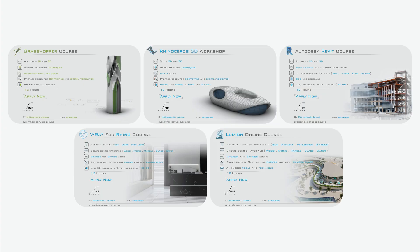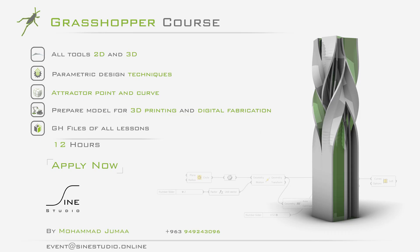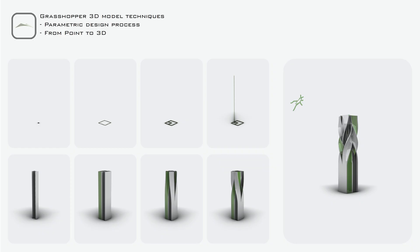We also offer other courses like Rhino, Revit, V-Ray for Rhino, and Lumion. In this course, we will learn everything related to Grasshopper — from 2D and 3D parametric design techniques like attractor point and attractor curve, to preparing models for 3D printing and digital fabrication. You will also get all GH files for every lesson.